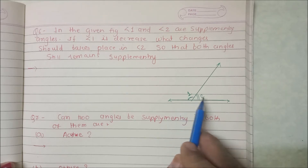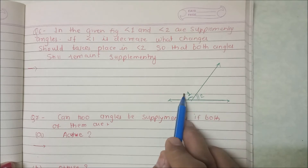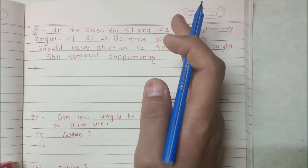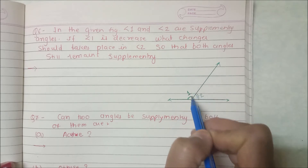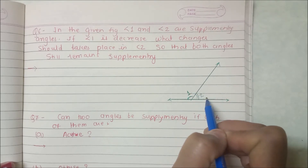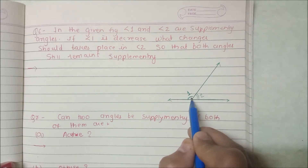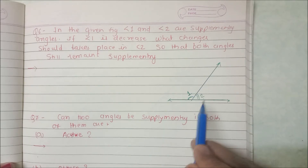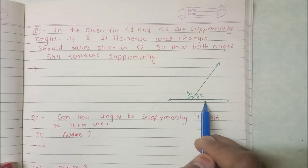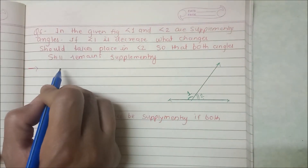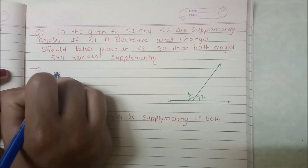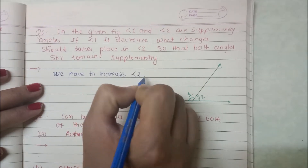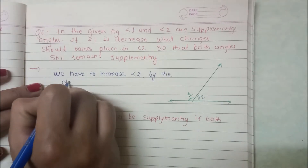Suppose angle 1 is 120 degrees. Both angles together are 180 degrees, so angle 2 is 60 degrees. If angle 1 is reduced — suppose it becomes 90 degrees — then angle 2 must become 90 degrees as well. So I have to increase angle 2 by the same number of degrees.